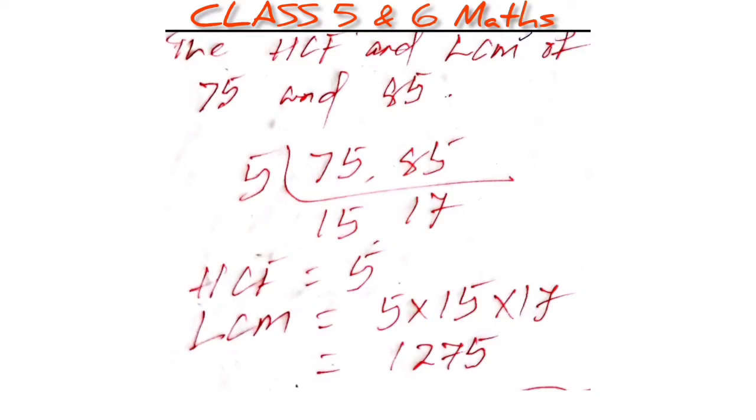75 and 85. First we will divide both by 5, so we will get 15 and 17. So HCF equals 5. And also LCM equals 5 multiplied by 15 multiplied by 17, which equals 1275. In this way we can determine HCF and LCM.